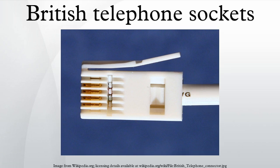It is also used in Bahrain, Bangladesh, Belize, Botswana, Brunei, Cyprus, Eritrea, the Falkland Islands, Ghana, Gibraltar, Israel, Jordan, Kenya, Kuwait, Lesotho, Malawi, Malta, Myanmar, Nigeria, Oman, Qatar, Saudi Arabia, Swaziland, Tanzania, the United Arab Emirates, Zambia, and Zimbabwe. The jack is still found in Hong Kong, where new installations ceased in 1998, while in St. Vincent and the Grenadines, new installations ceased in 2001, with RJ11 now used instead.